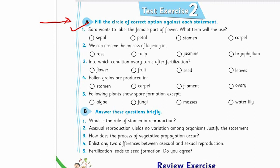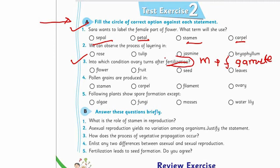The female part of a flower is called sepal, petal, stamen, or carpal — fill the circle of whichever is correct. Then solve question number 3: Into which condition does the ovary turn after fertilization? Whenever there is successful fertilization — meaning the fusion of male and female gamete — the ovary transforms into a flower, a fruit, a seed, or leaves. Fill the correct circle.